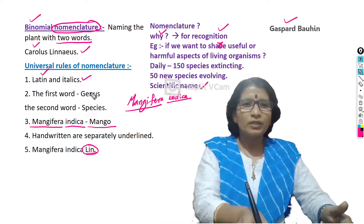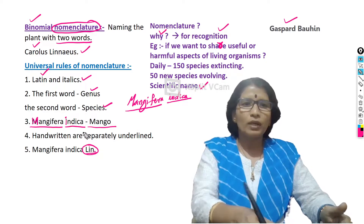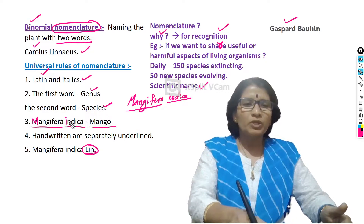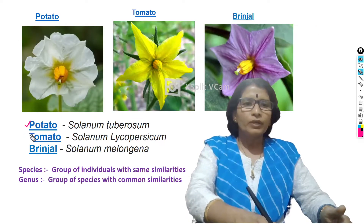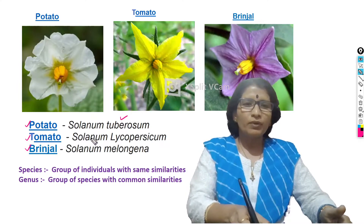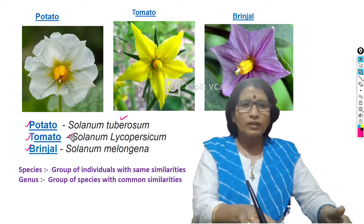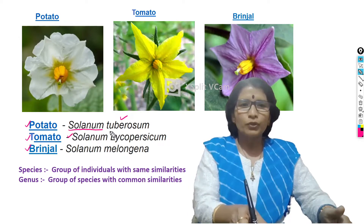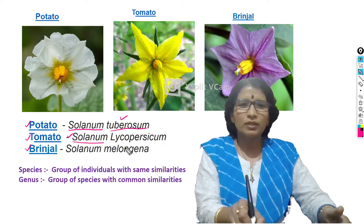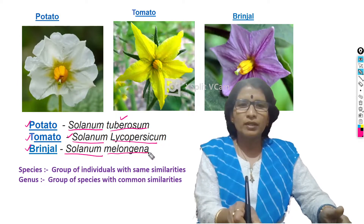The first word, Mangifera, is the genus, and the second word, indica, is the species. In the genus, the first letter must be a capital letter. In the species, the first letter must be a small letter. To understand genus and species, take three examples: Potato, Tomato, and Brinjal. Potato's scientific name is Solanum tuberosum. Tomato's scientific name is Solanum lycopersicum. Brinjal's scientific name is Solanum melongena. In all three, Solanum is the genus, while tuberosum, lycopersicum, and melongena are the respective species names.